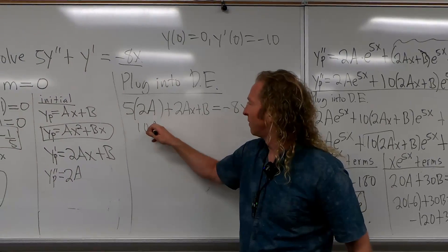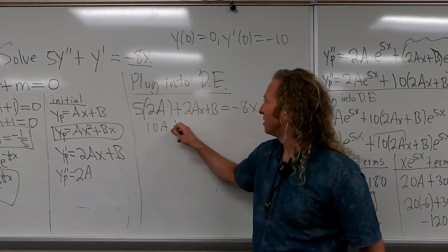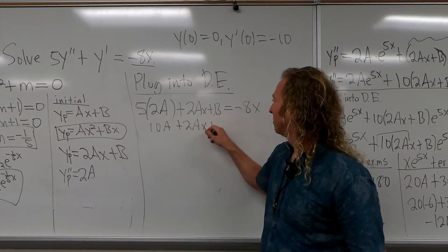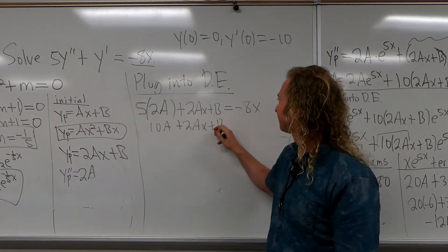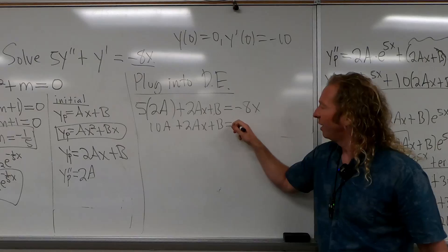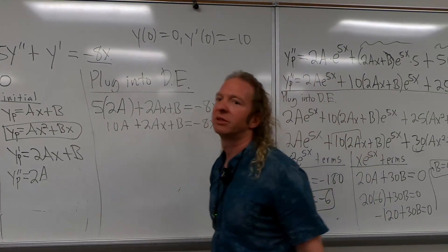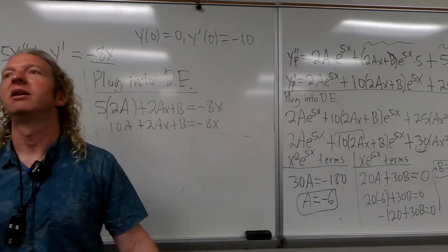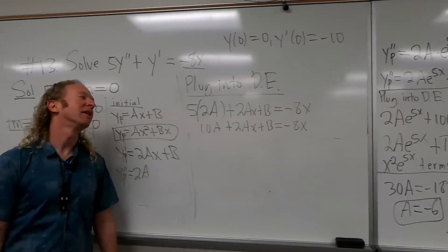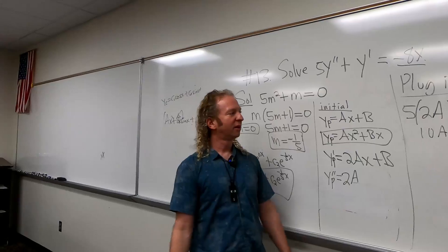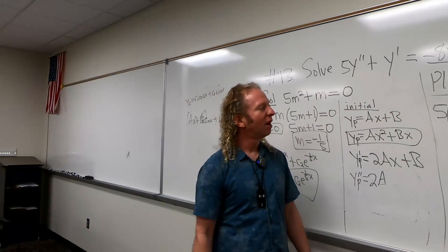Clean it up: 10A plus 2AX plus B equals negative 8x. So make that step.